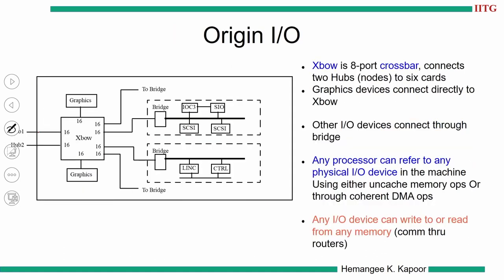The hub connects to the XBO module. Every XBO module is an eight-port crossbar: two ports go to the hubs, two ports go to a graphics processing unit, and another four connect to different bridges. These bridges are used for IO or connecting to disks and other peripherals. The XBO switch connects two hubs to the outside network. All IO devices connect through the bridge to the XBO, whereas graphics devices and hubs connect directly to the XBO.